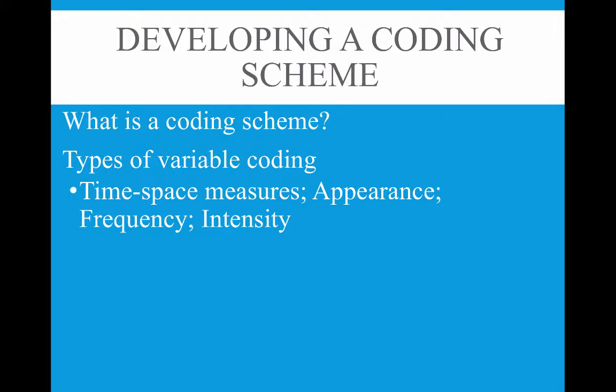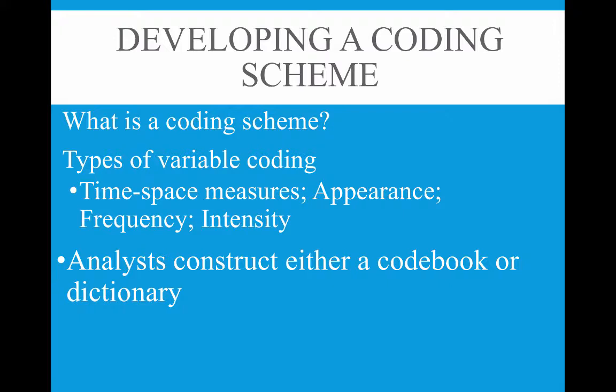Intensity, or valence, refers to whether the content is negative, neutral, or positive. If you're looking at references to drugs in music, you assess whether the reference is negative, positive, or neutral — some genres are very pro-drug use, some are neutral, and some are actually negative toward drug use. From these types of variable coding, analysts construct either a code book for manual coding or a dictionary for computer coding.